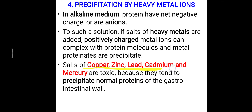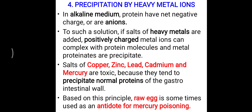Salts of copper, zinc, lead, cadmium, and mercury are toxic because they tend to precipitate the normal proteins of the gastrointestinal wall. If a child accidentally ingests these metals, the proteins of the gastrointestinal tract are precipitated. Based on this principle, raw egg — which contains an alkaline medium — is used as an antidote for heavy metal or mercury poisoning. The negatively charged proteins in raw egg bind the positively charged mercury ions, preventing the mercury from attaching to the gastrointestinal wall and minimizing its toxic effect.